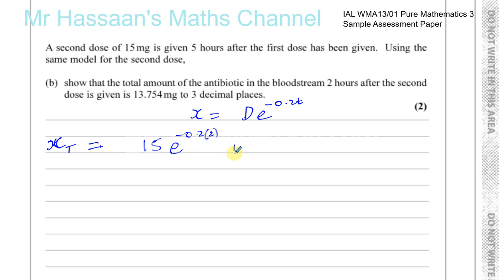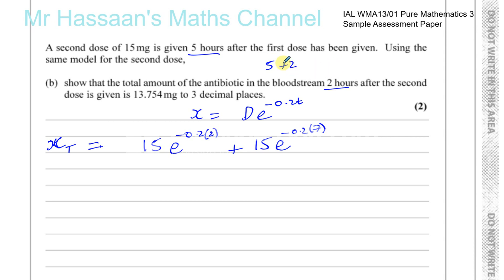For the first dose that was given, you're going to have 15 times E to the power of minus 0.2. Two hours after the second dose is given, so T equals two for the second dose. The time after the first dose is five hours plus two hours, so it's seven hours. So this represents the amount in the bloodstream after the second dose — two hours after it's given — and the first dose uses T equals seven. Therefore the total dose is given by adding both terms.